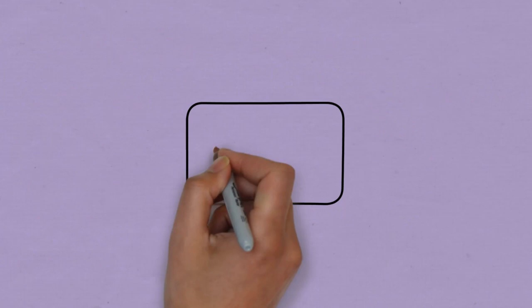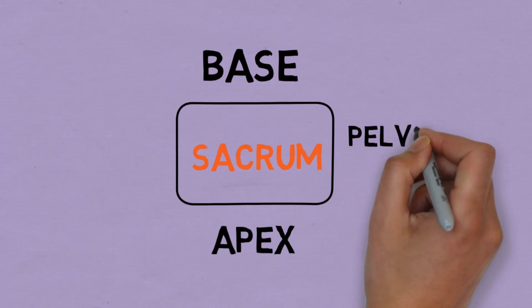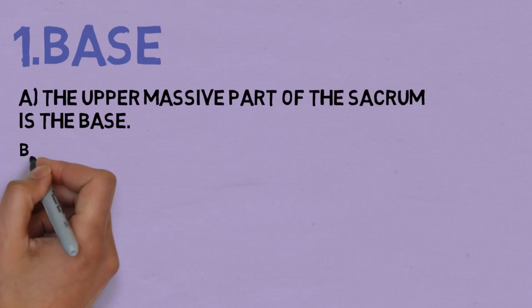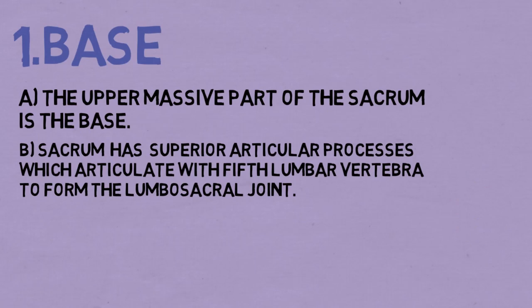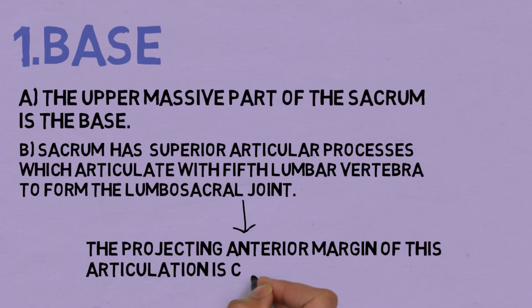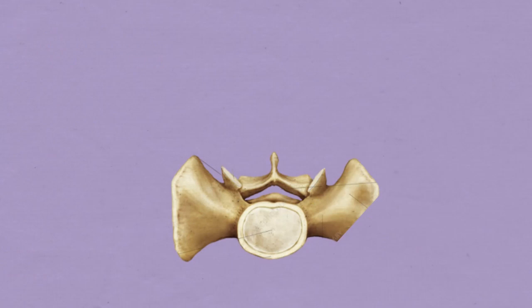Basically, sacrum has a base, an apex, a pelvic surface, and a dorsal surface. Let's discuss each separately. First is the base — the upper massive part of the sacrum. The sacrum has superior articular processes which articulate with the fifth lumbar vertebra to form the lumbosacral joint. The projecting anterior margin of this articulation is called the promontory — a little unusual word, but that's what it is. This is the superior view of sacrum.